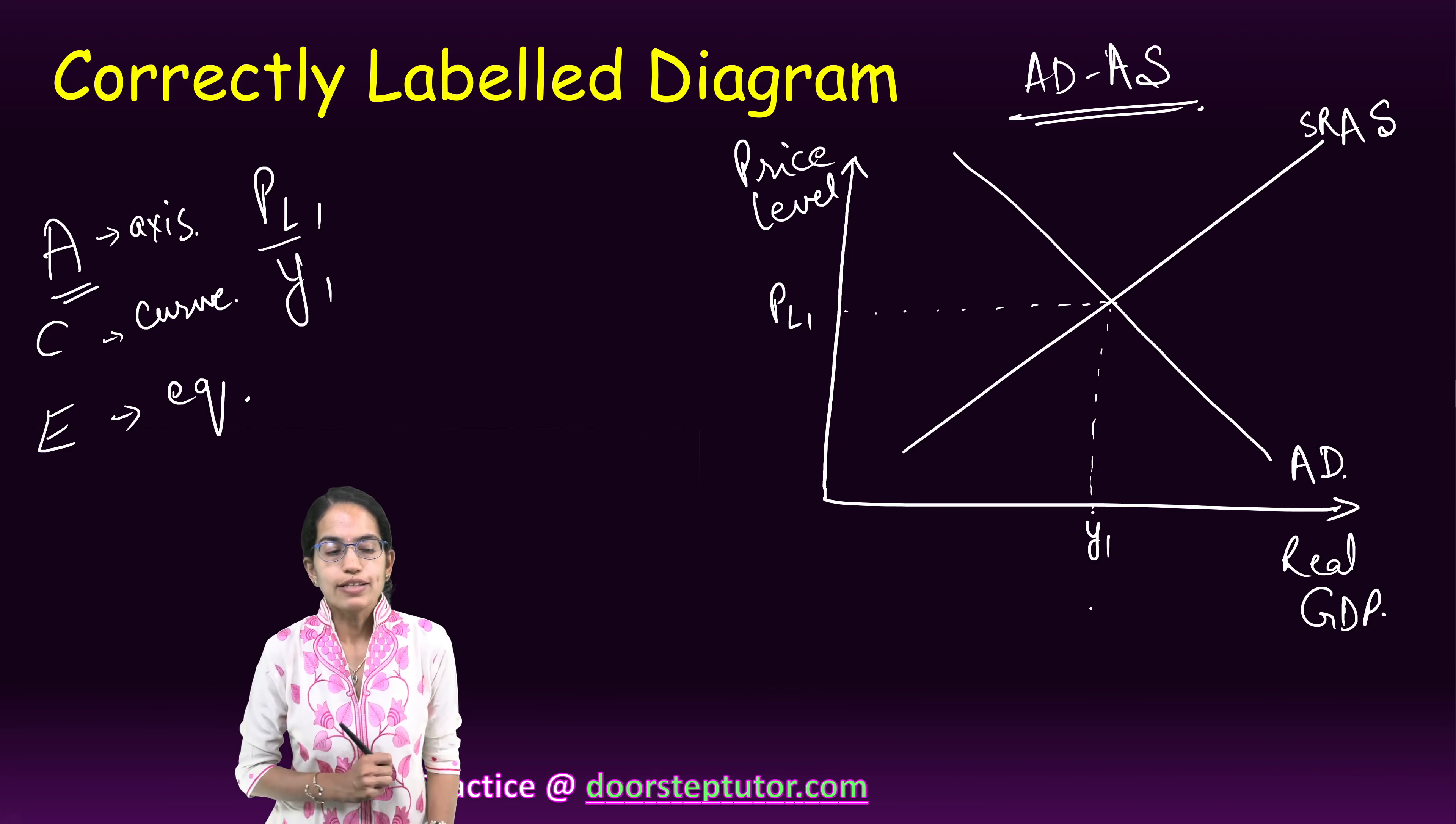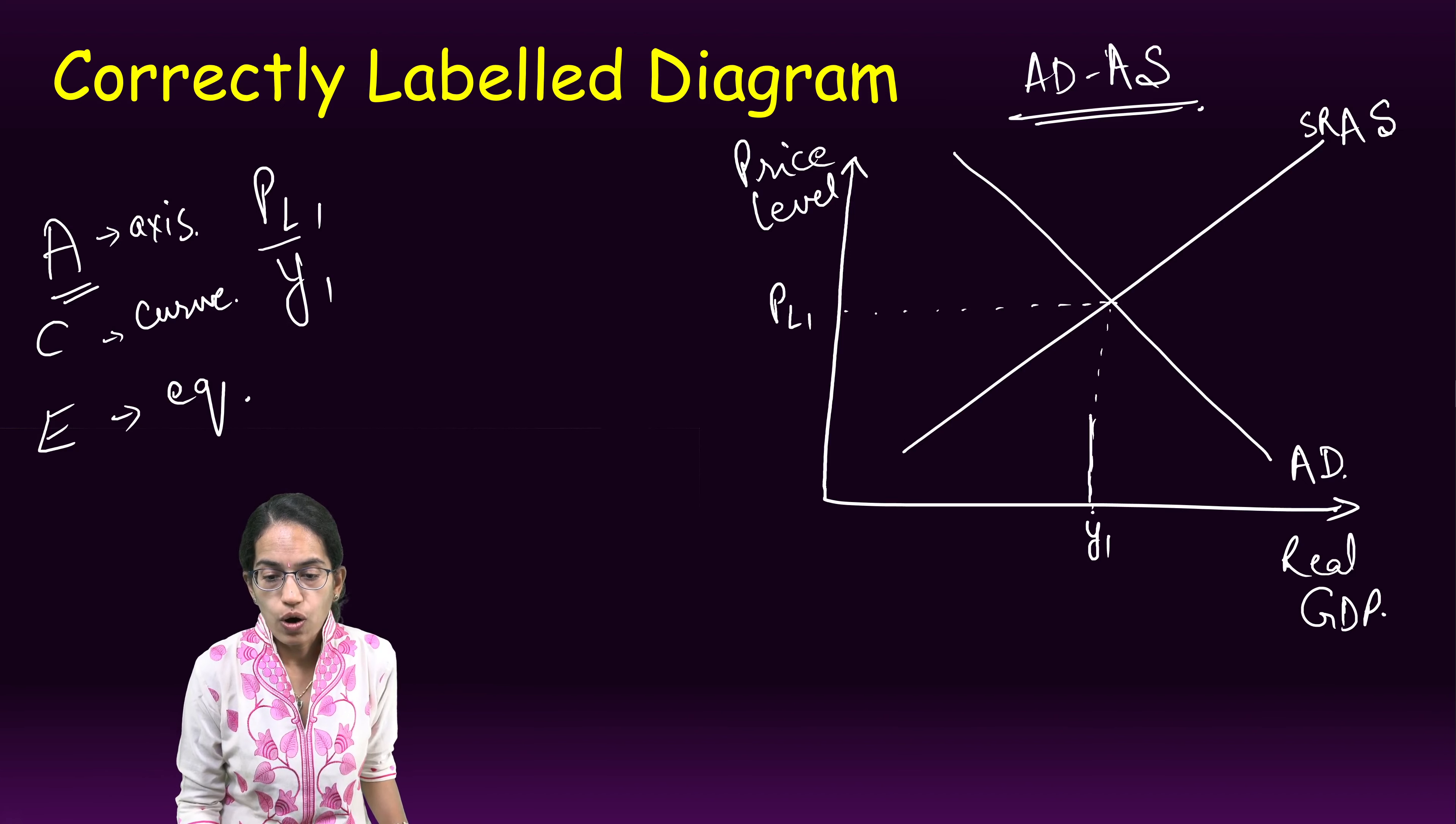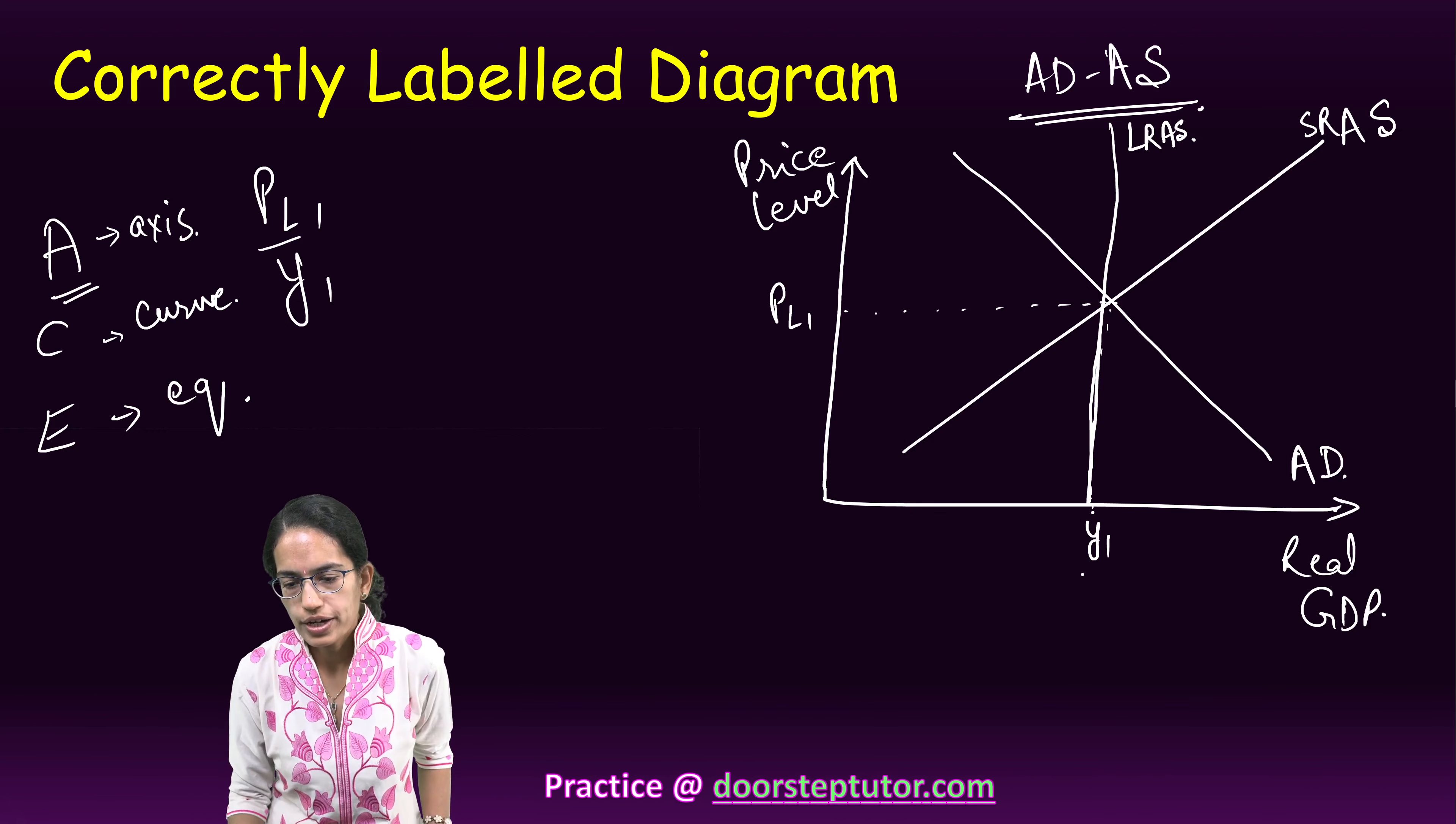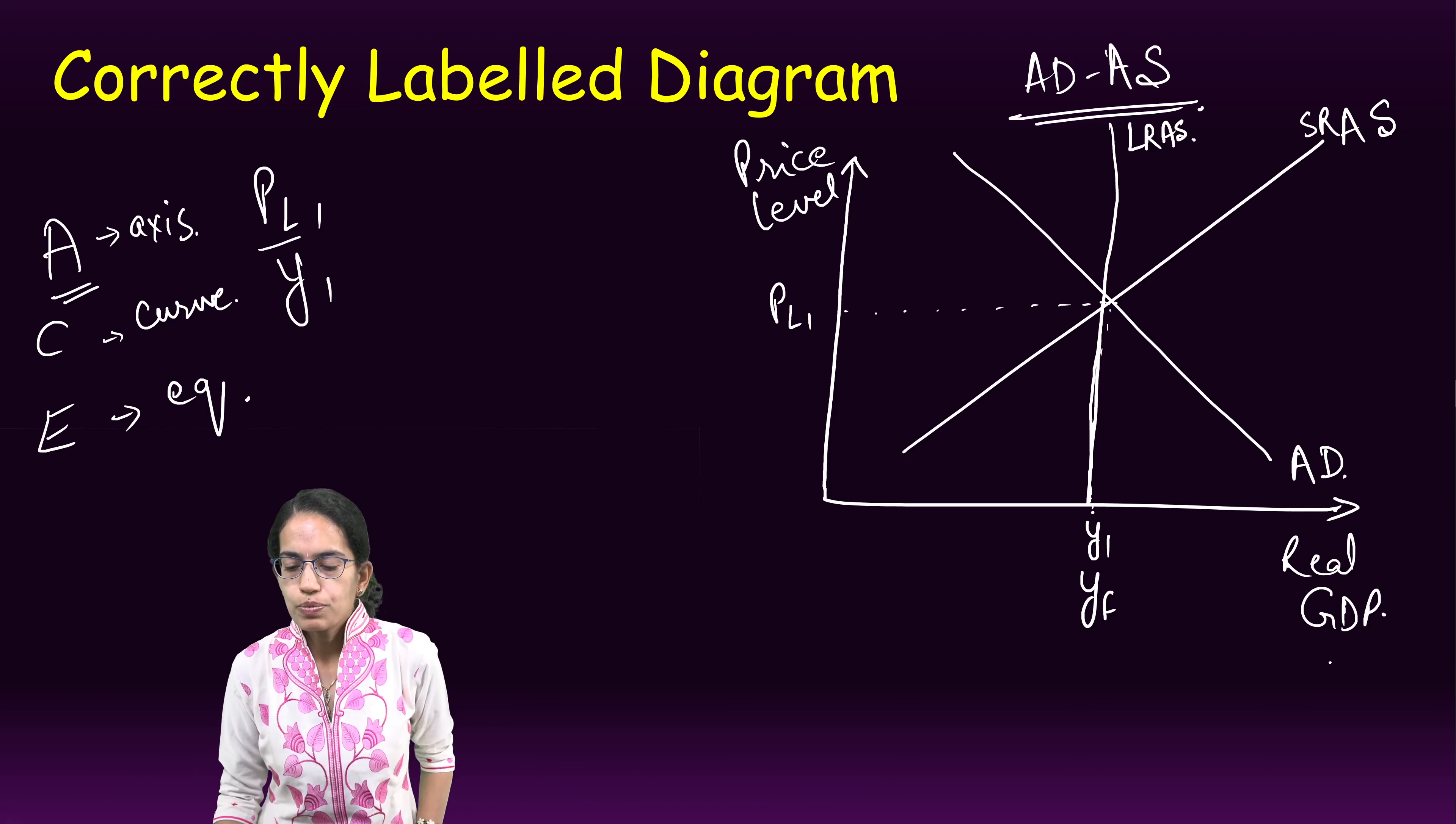Now note, in the same graph if you are asked to include the aggregate supply or the long run supply, this would be the line for the long run aggregate supply, and this would be the point of full employment. This full employment would coincide with your current output, which is Y1, and this real output is again real GDP, which is also the quantity or the output here.